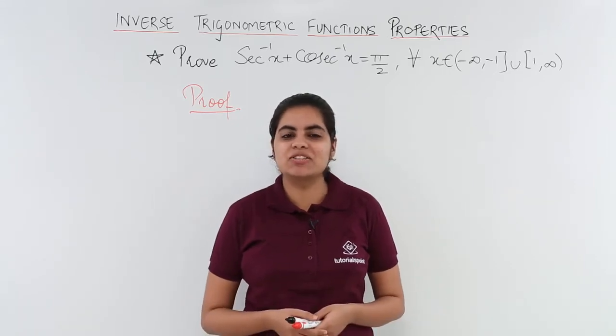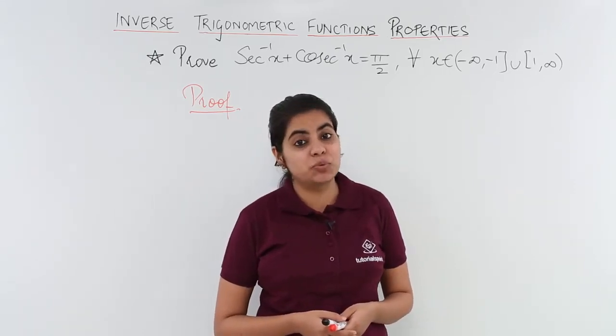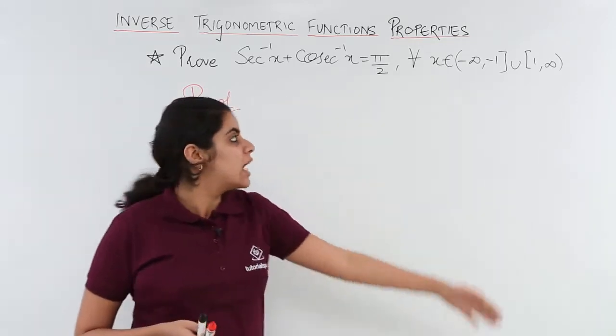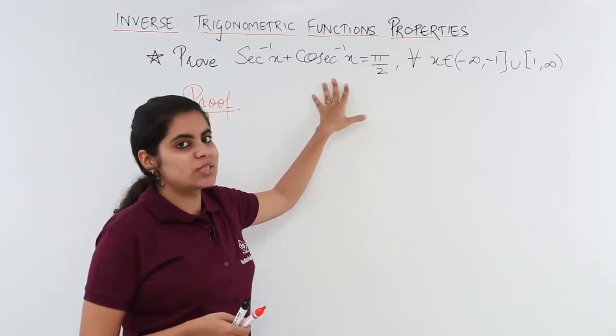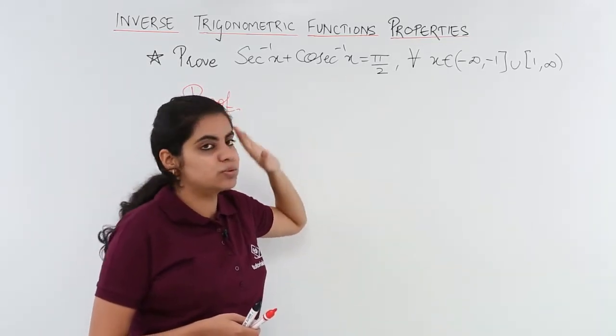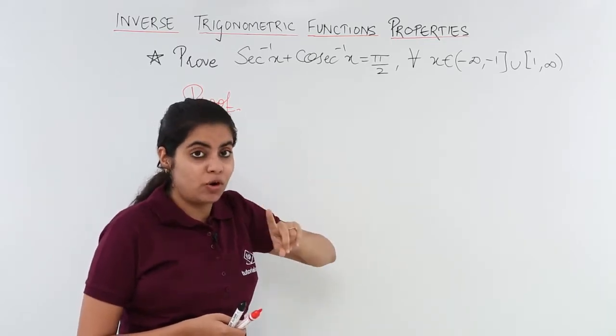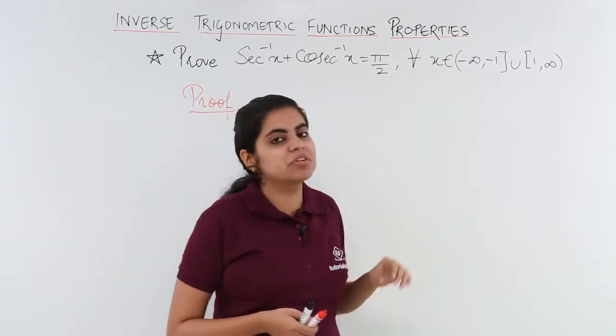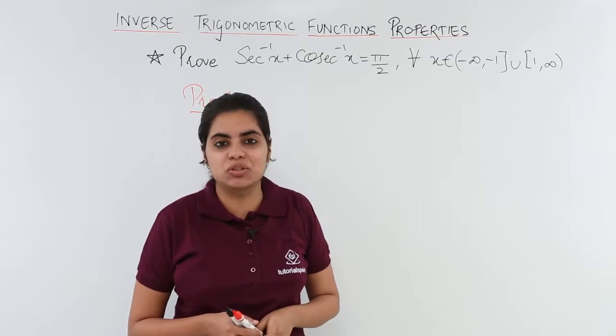In this video we are going to see the next property set proof, that is proof that secant inverse x plus cosecant inverse x is equal to π/2 for all x belongs to (-∞, -1] ∪ [1, ∞).